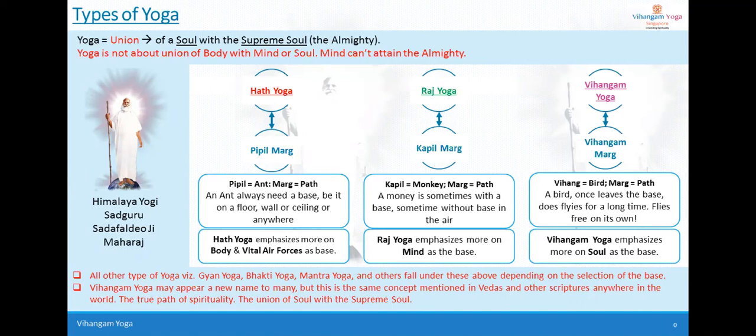There are three main types: Hatha Yoga, Raja Yoga, and many others such as Mantra Yoga, Bhakti Yoga. In fact, nowadays I even heard someone mention beer yoga here in Singapore. People have been categorizing things on their own, but let's look at what these types actually mean in terms of philosophical understanding.